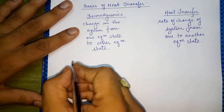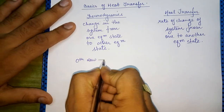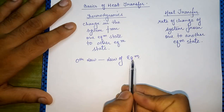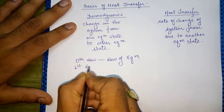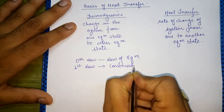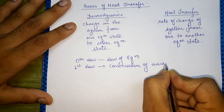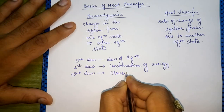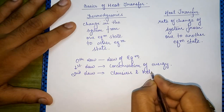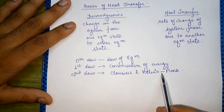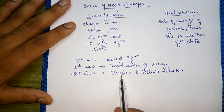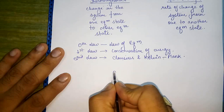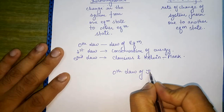The zeroth law of thermodynamics is mainly a law of equilibrium. The first law of thermodynamics is mainly for the conservation of energy. The second law of thermodynamics has two statements: the Clausius statement and the Kelvin-Planck statement. The Kelvin-Planck statement is mainly given with respect to heat engines, whereas the Clausius statement is mainly given for refrigerators and heat pumps.